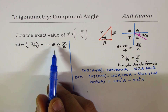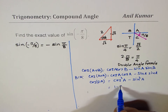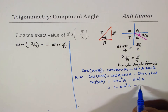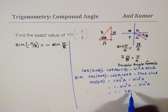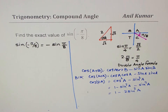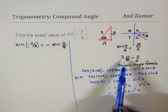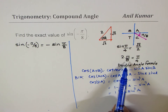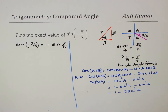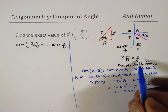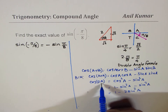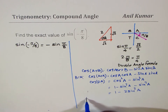Since we want to work with sine, let me write cos²(a) as 1 − sin²(a). Then we have cos(2a) = 1 − sin²(a) − sin²(a), which gives us 1 − 2sin²(a) = cos(2a). In this way we have related angle a with twice the angle.